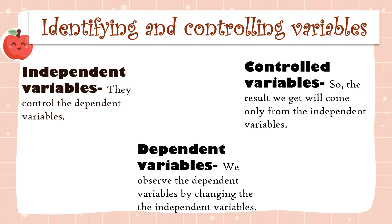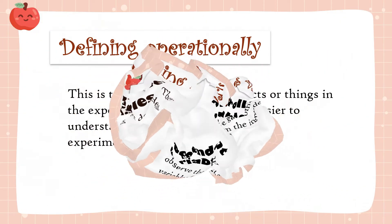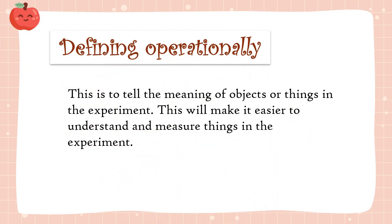Number three: dependent variables — we observe the dependent variables by changing the independent variables. Defining operationally is to tell the meaning of objects or things in the experiment. This will make it easier to understand and measure things in the experiment.